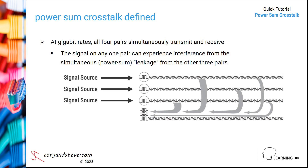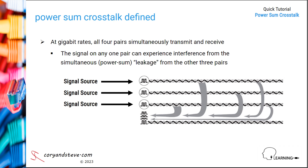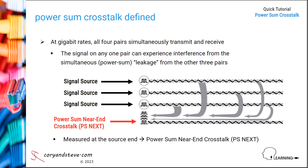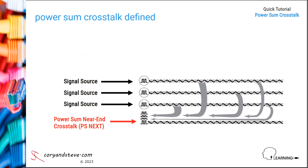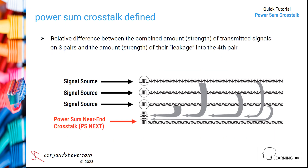As shown here, when the crosstalk measurement is at the signaling source end, it's referred to as PowerSum near-end crosstalk or PS-NEXT testing. Since we're measuring the relative difference between the strength of three signals and the combined strength of their leakage, a higher decibel or dB value is better — it means there's more signal energy and less leaked energy.